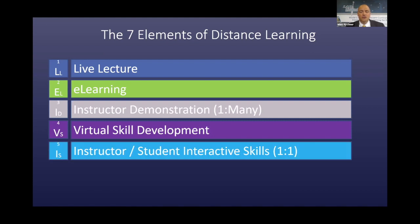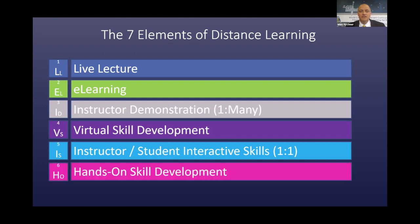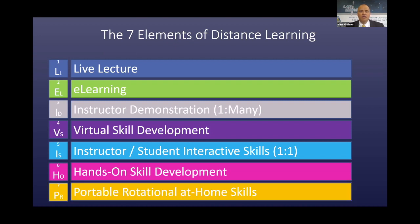Next is instructor and student interactive skills, one to one, where an individual student interacts with an individual instructor and the student coaches the instructor through a specific skill. Number six is hands-on skill development, getting our students into the lab in a safe fashion so that they can practice their hands-on skills. And finally, portable rotational at-home skills, taking a portable trainer home so that a student can do the skill at home and then return the trainer to the school.